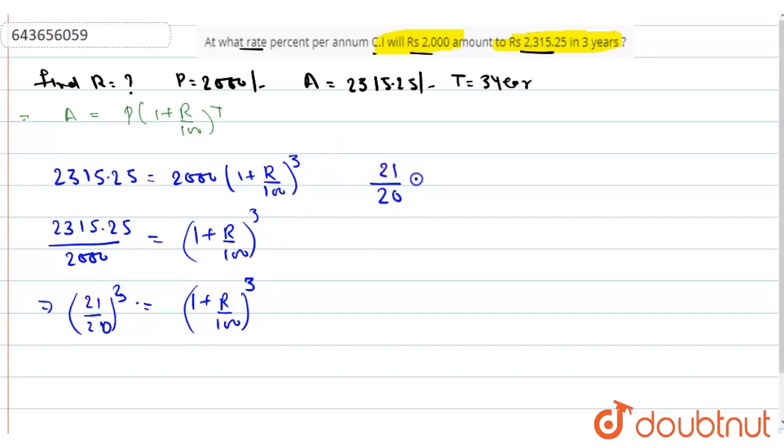So, 21 upon 20 minus 1 equals R upon 100. Taking LCM on both sides, we get (21 minus 20) upon 20 equals R upon 100.